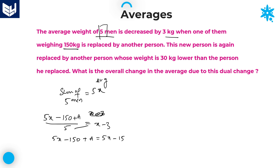You can do the cross multiplication: 5 into x is 5x, 5 into 3 is 15. Now 5x gets cancelled. Therefore A is equal to 150 minus 15, which is equal to 135 kgs.